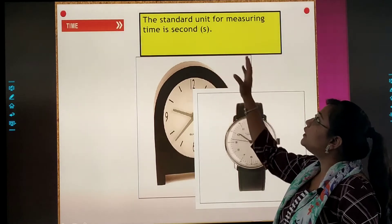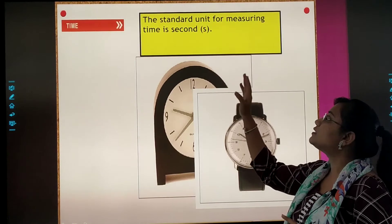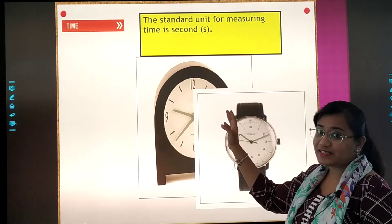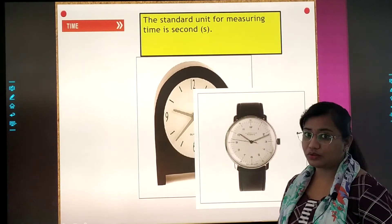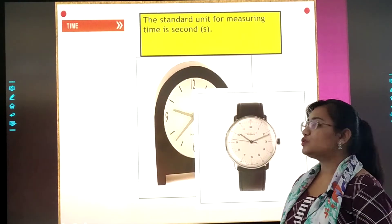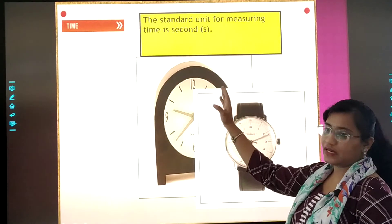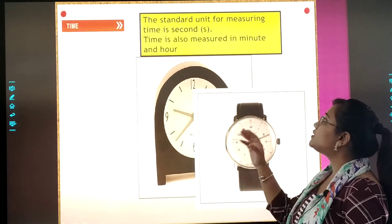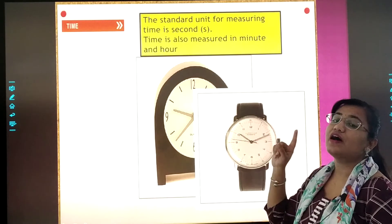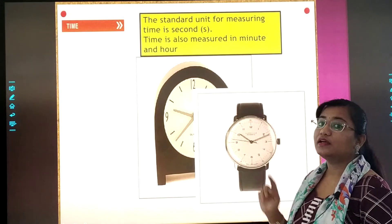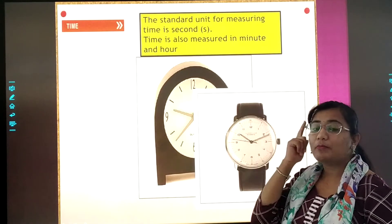The standard unit for measuring time is second or seconds. Har measurement ka ek particular unit hota hai. Right? So over here the unit of time is seconds. Okay? Time is also measured in minute or hour. Okay? Clear? You need to keep the standard units in your mind. Okay?